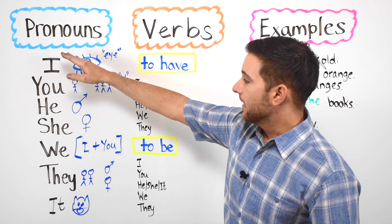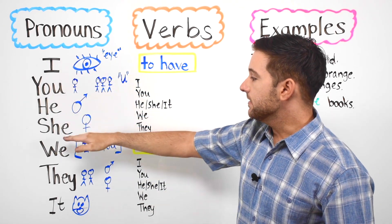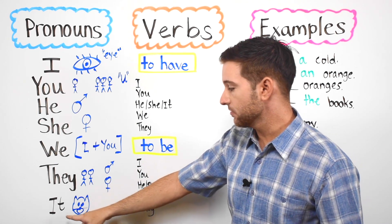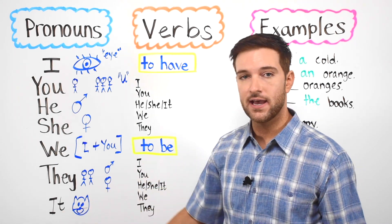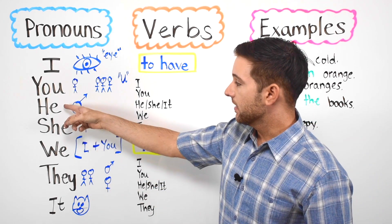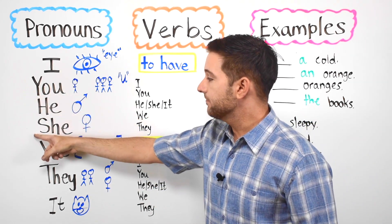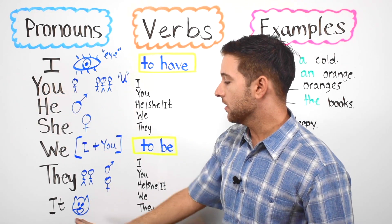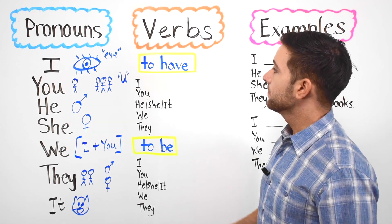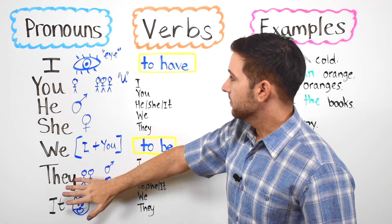So again, I, you, he, she, we, they, and it. Now remember it is used for nouns that do not have gender. If we're talking about people, we have to use he and she. In all other cases we use it. Let's go ahead and continue guys. So these are the pronouns in English. Now let's move on to verbs.